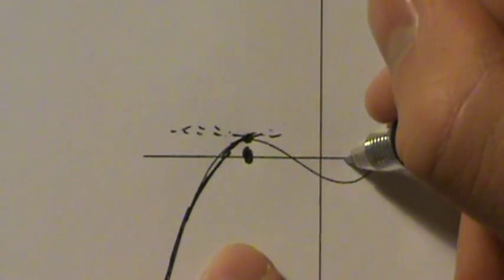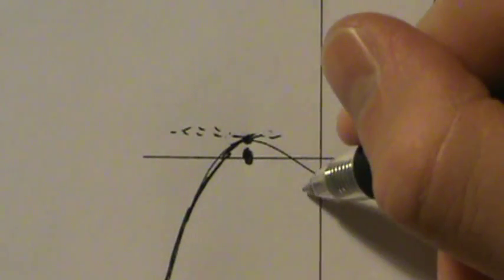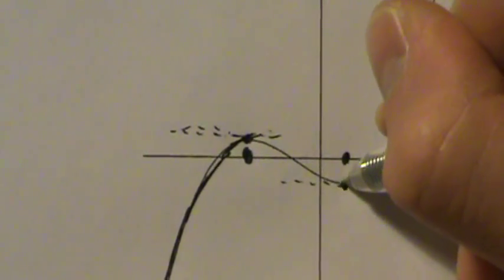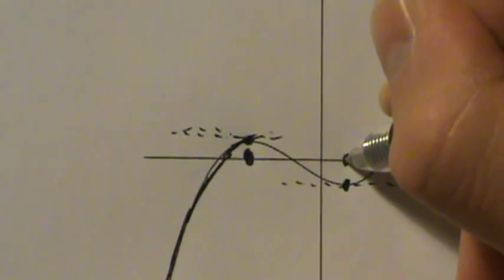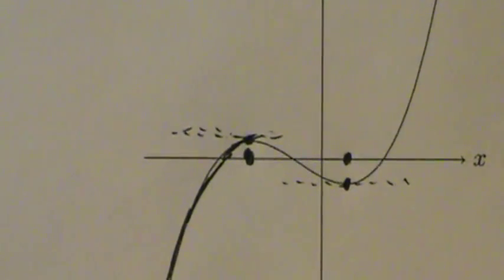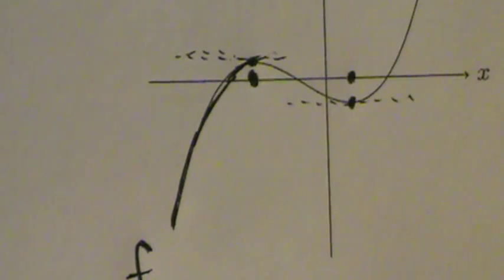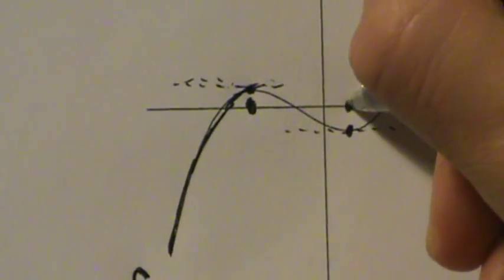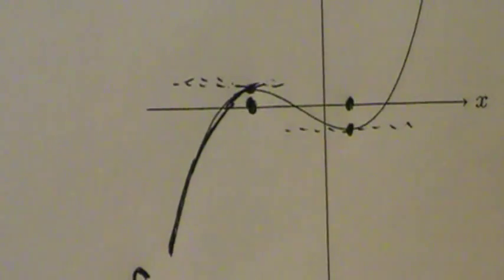The same thing is happening over here. f has another horizontal tangent line right here, so at this same value of x, the derivative of f must be zero. It's easy to pick those points out where the derivative is zero, if the graph isn't too messy and complicated. So we have that going on.